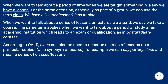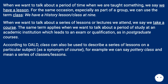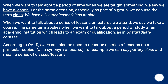When we want to talk about a period of time when we are taught something, we say we have a lesson. For the same occasion, especially as part of a group, we can use the term class — we have a history lesson or class at 9. When we want to talk about a series of lessons or lectures we attend, we say we take a course. The same term applies when we want to talk about a period of study at an academic institution which leads to an exam or qualification, as in postgraduate courses.